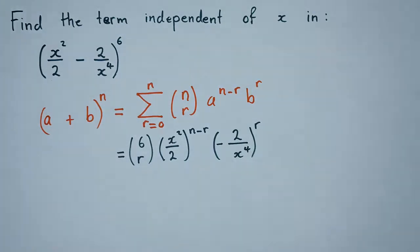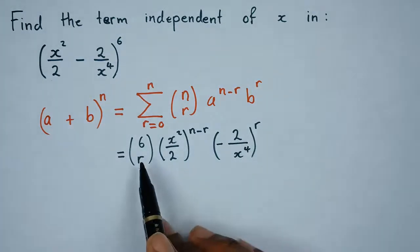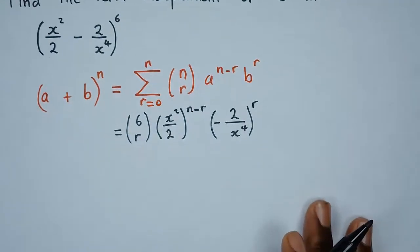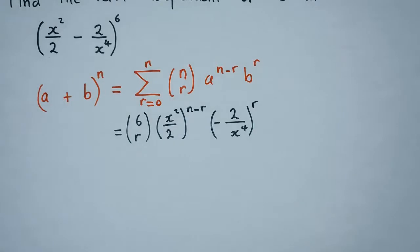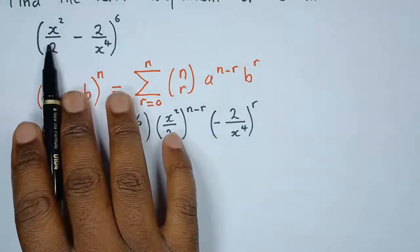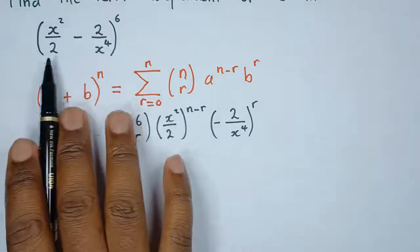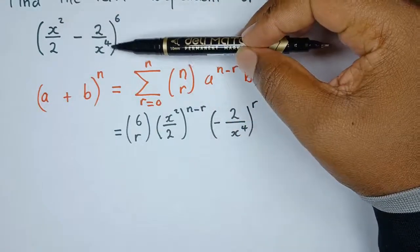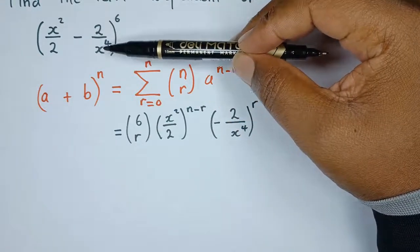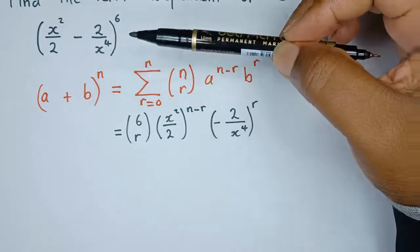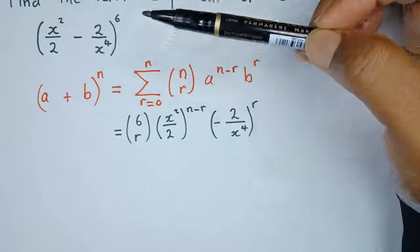C(6, r) is just a combination that gives us a coefficient. We don't necessarily need it for computing the term independent of x. When we say the term independent of x, we simply mean we're looking for a term that does not have x. We have x in the numerator from a and in the denominator from b, so we need to balance these so that x cancels out.